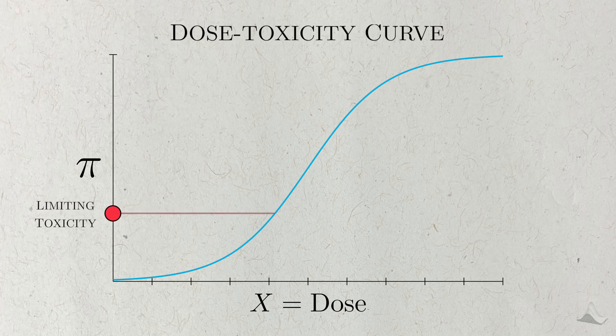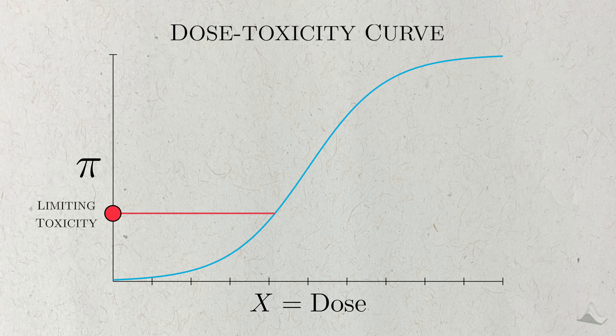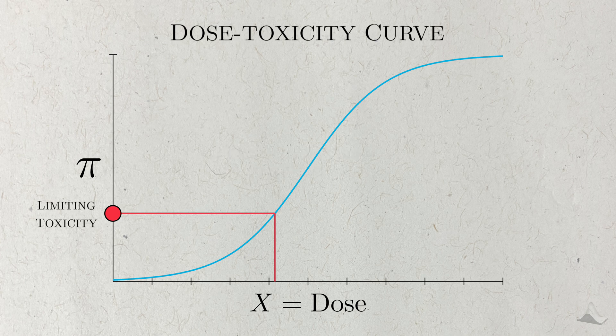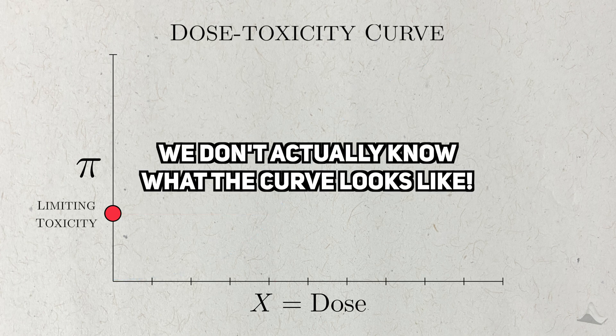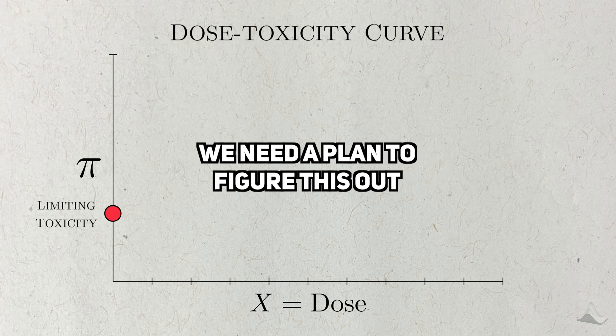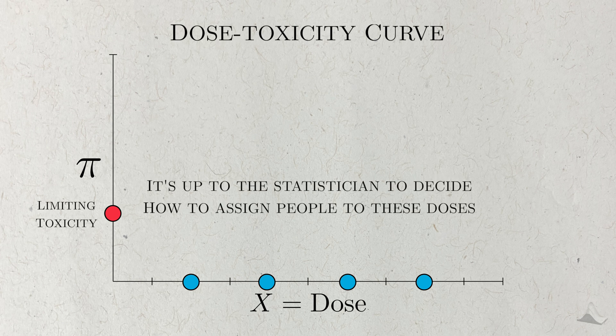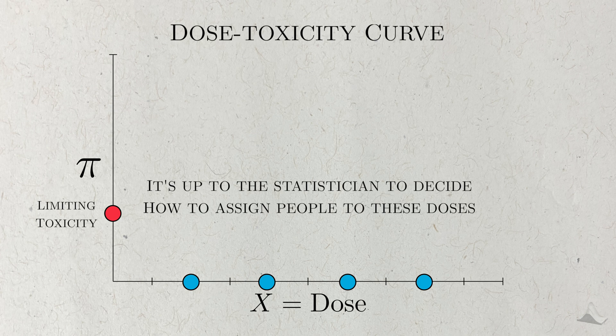To figure out a safe dose, we'd find some maximum probability that we tolerate for a toxicity. If a dose only causes toxicities at this rate, then we'd consider it safe enough to move forward with. This dose has a special name too: the maximum tolerated dose, or MTD. That's easier said than done. We don't actually know what the dose-toxicity curve looks like. We need a plan to gather data to figure that out. Usually, a clinical team will figure out a set of doses to try, and it's the job of the statistician to figure out how to assign people to different doses to best figure out the MTD.